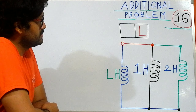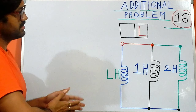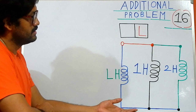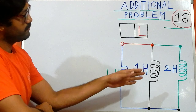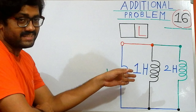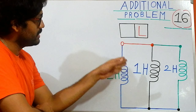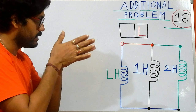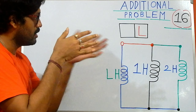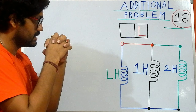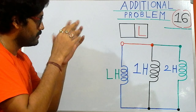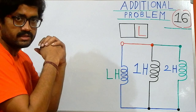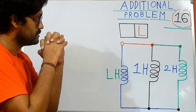Hi, we are Engineering Brothers and this is our 16th additional problem. This problem is very interesting — you can see that a two henry and one henry inductor are connected in parallel, and along with this, another inductor L is also connected in parallel. We need to find the value of L for the condition where the equivalent inductance tends to infinity.